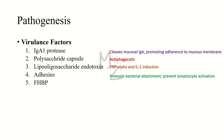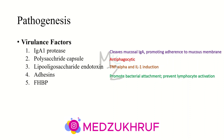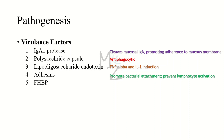The fourth virulence factor is adhesins — they promote bacterial attachment and prevent lymphocyte activation. The fifth virulence factor is factor H binding protein. It reduces opsonization activity. Factor H binding protein present on the meningococcus binds to factor H, an inhibitor of complement factor C3b. The presence of factor H on the surface of meningococcus reduces the opsonization activity of C3b and reduces the amount of membrane attack complex produced. Factor H binding protein is also an immunogen used in certain vaccines against Neisseria meningitidis.